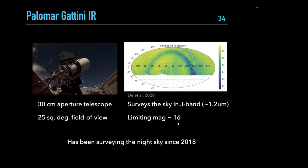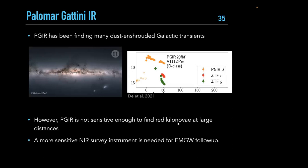PGIR has been excellent at finding dust-shrouded galactic transients. Shown is a dust map of the Milky Way with dark patches of dust — any transient behind this dust is invisible to optical surveys. With PGIR, we've been finding many dust-shrouded novae significantly brighter in J-band than in the optical. In some cases ZTF didn't detect a nova at all despite its 20.5 magnitude limit, while PGIR saw it at 9th or 10th magnitude in J-band due to the dust.